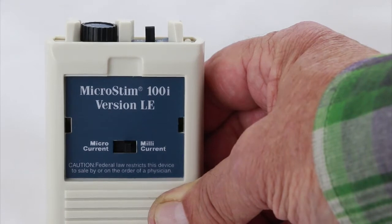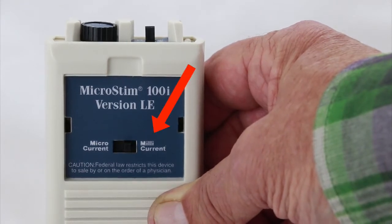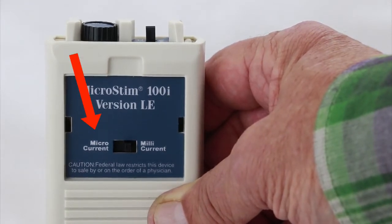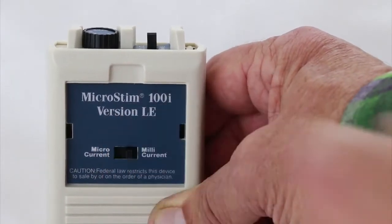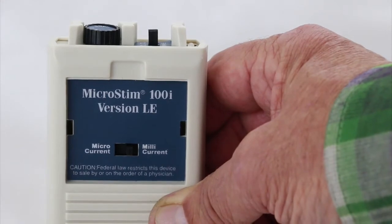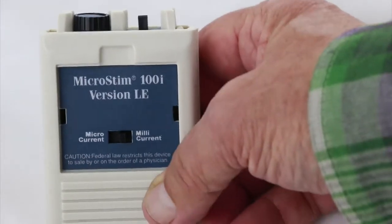On the right-hand side, it says milli. On the left-hand side, it says micro. This is described more in the booklet if you want more information. Just set it on milli and leave it there. That's the only switch under the door.